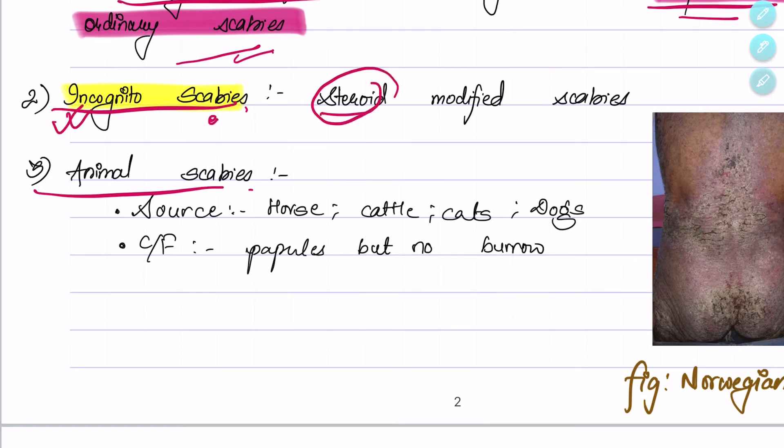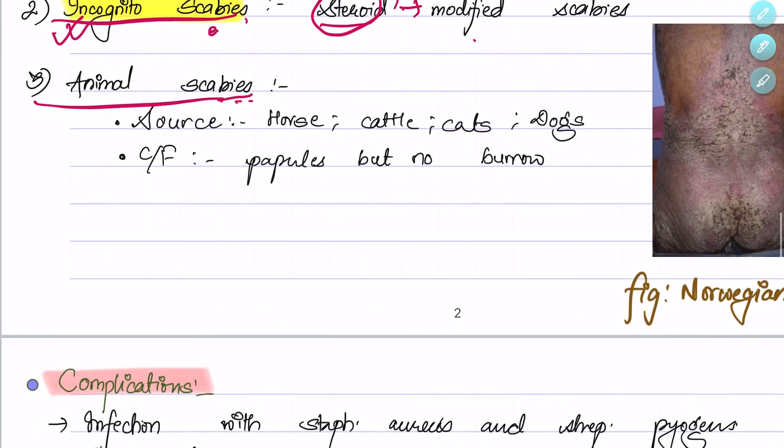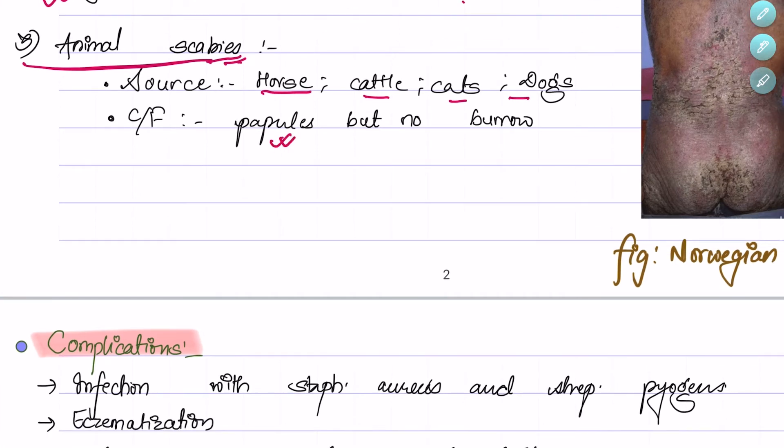Incognito scabies is a special type caused by use of steroids—that is, steroid-modified scabies. In animal scabies, the sources are horses, cattle, cats, and dogs. The clinical features are papules, but burrows will not be seen in animal scabies.